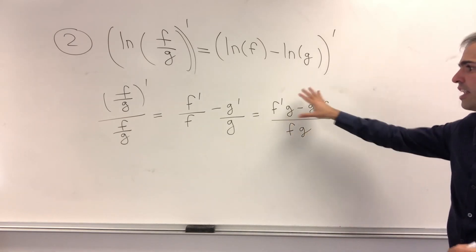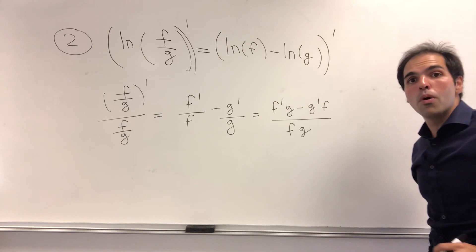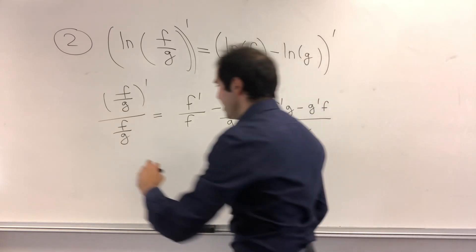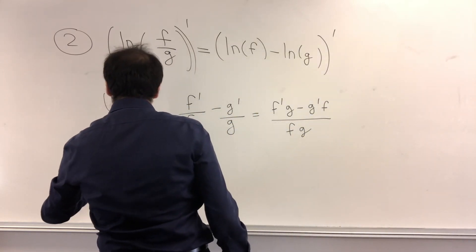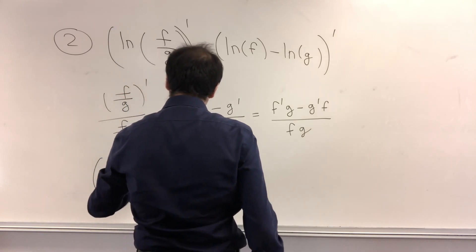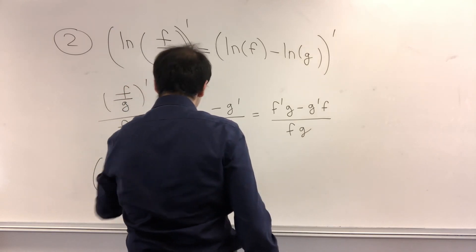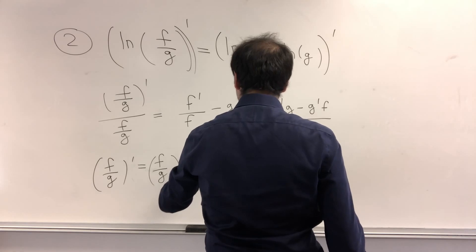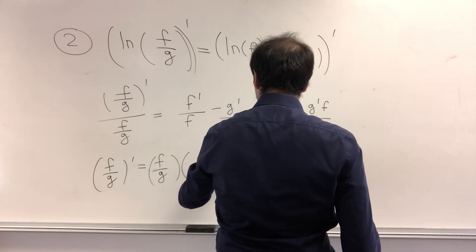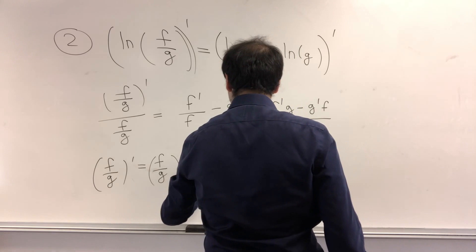All right. Very good. And now, just multiply both sides by f over g, and you ultimately get f over g prime equals f over g times f prime g minus g prime f over f g.